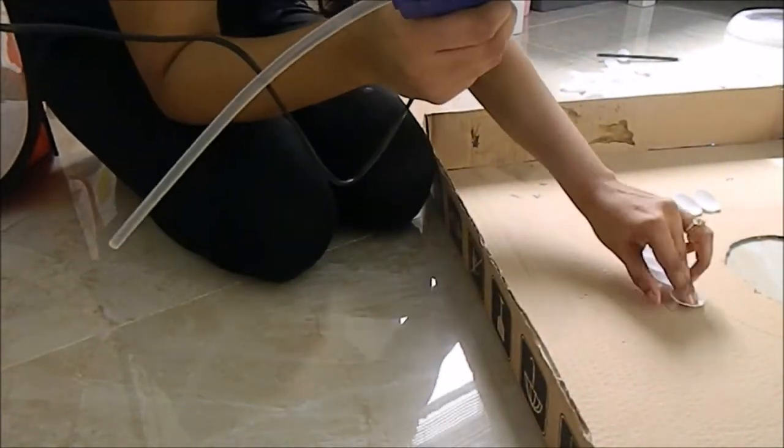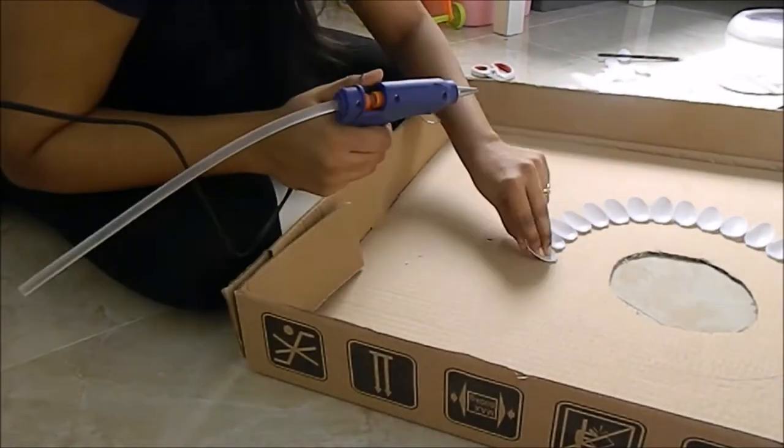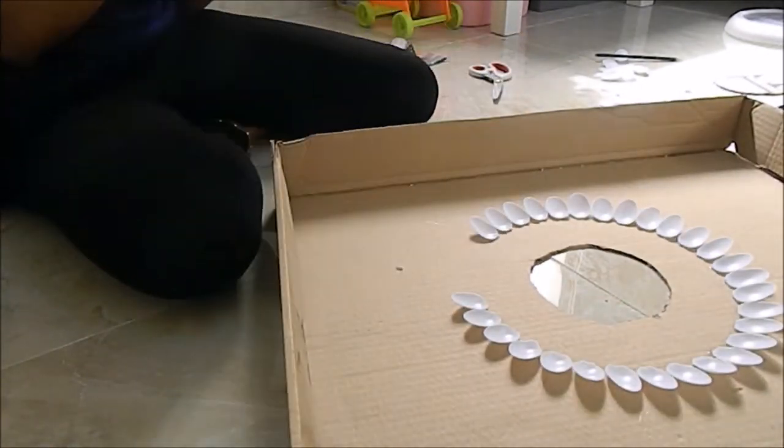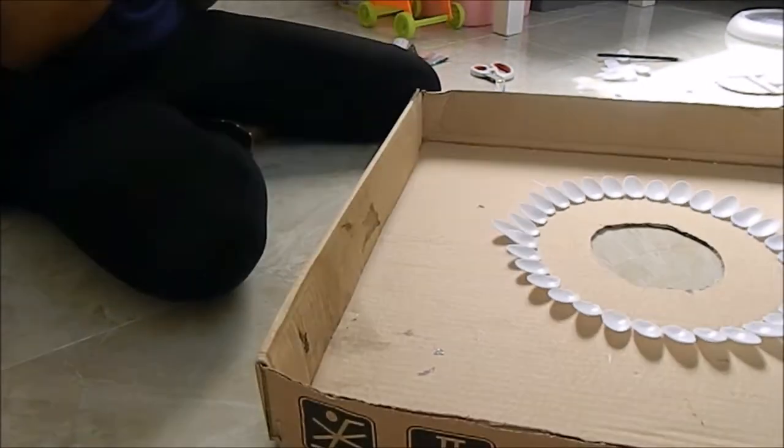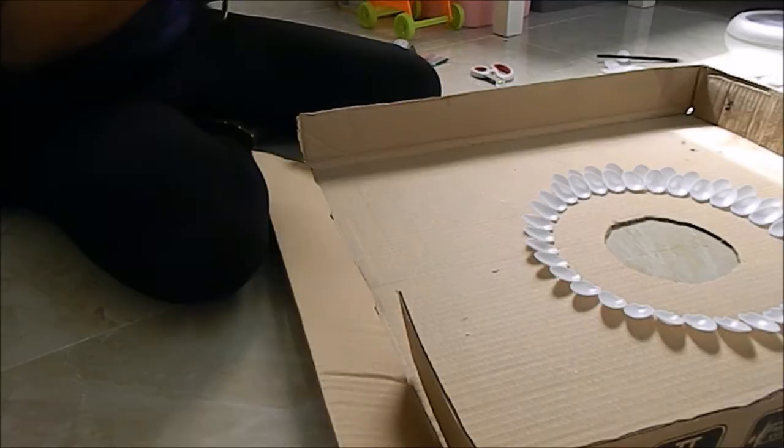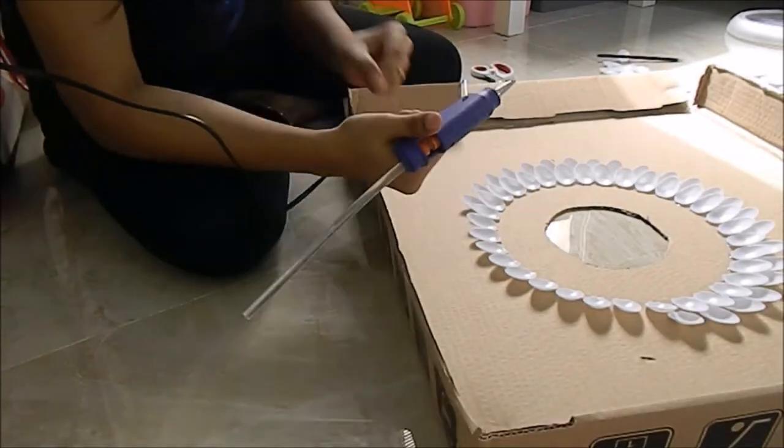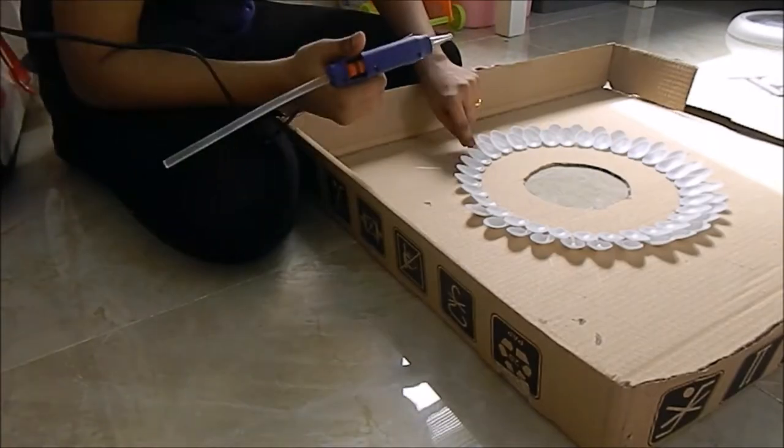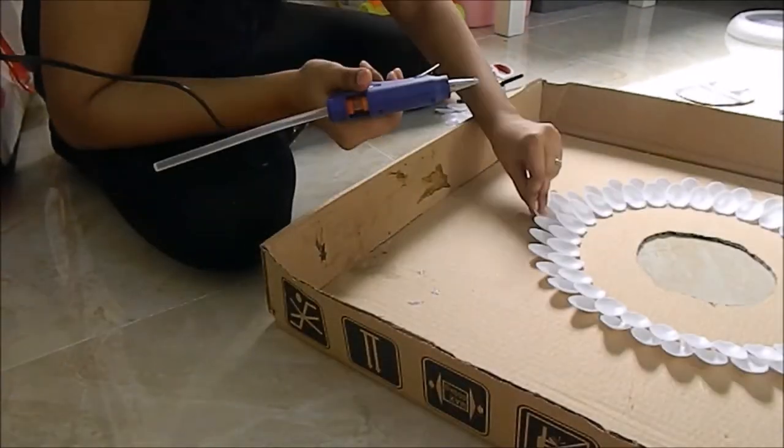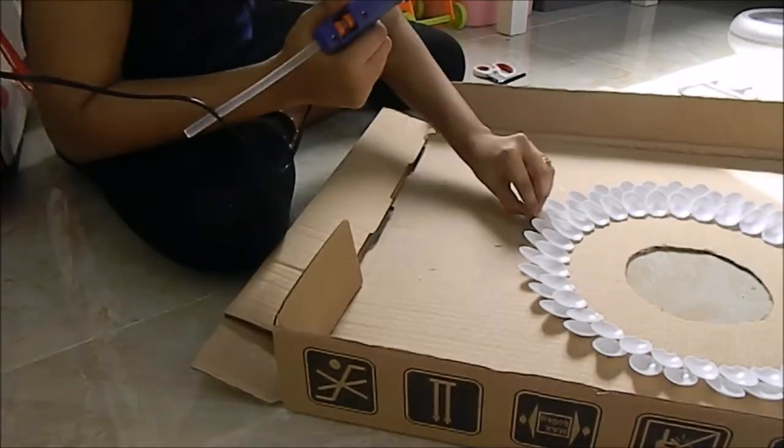Then with the glue gun I stick the spoons to the outer circle. With one packet I could give three layers of it.